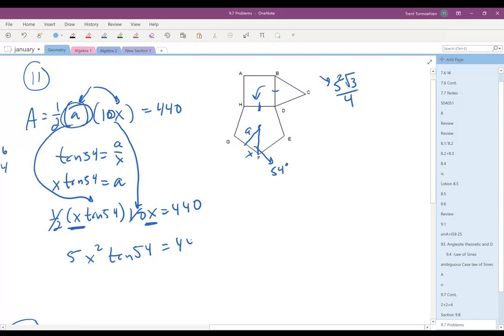That equals 440. So all I need to do is divide both sides by 5 tangent of 54, and then take the square root of that result. Now, one mistake I made earlier is I put in 5 tangent 54 without parentheses, so it divided by 5 and then multiplied by tan 54 instead of dividing by 5 tan 54. Make sure you do that correctly. When you do that,